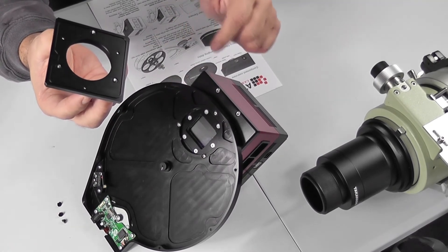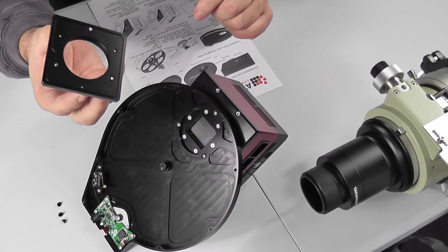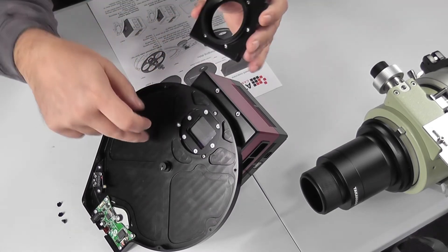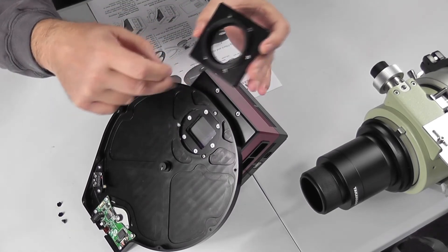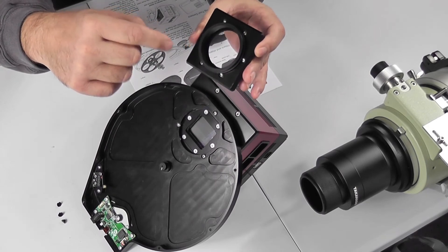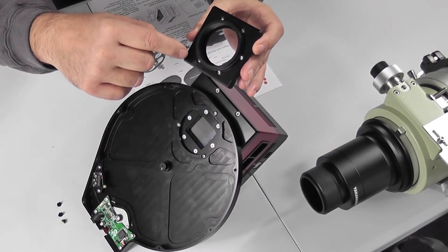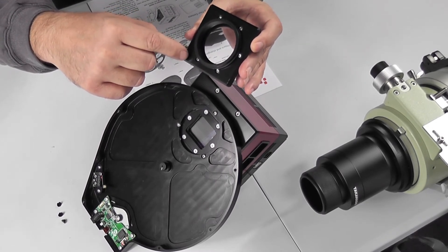Well they're actually not supplied. The ones that are supplied are the ones that hold the plate on. So if you take these out to fix the filter wheel to the front of the camera, the plate will fall off. So if you are fixing the filter wheel to the camera with this plate intact, you'll need to get yourself three M3 by 8mm socket headed screws.